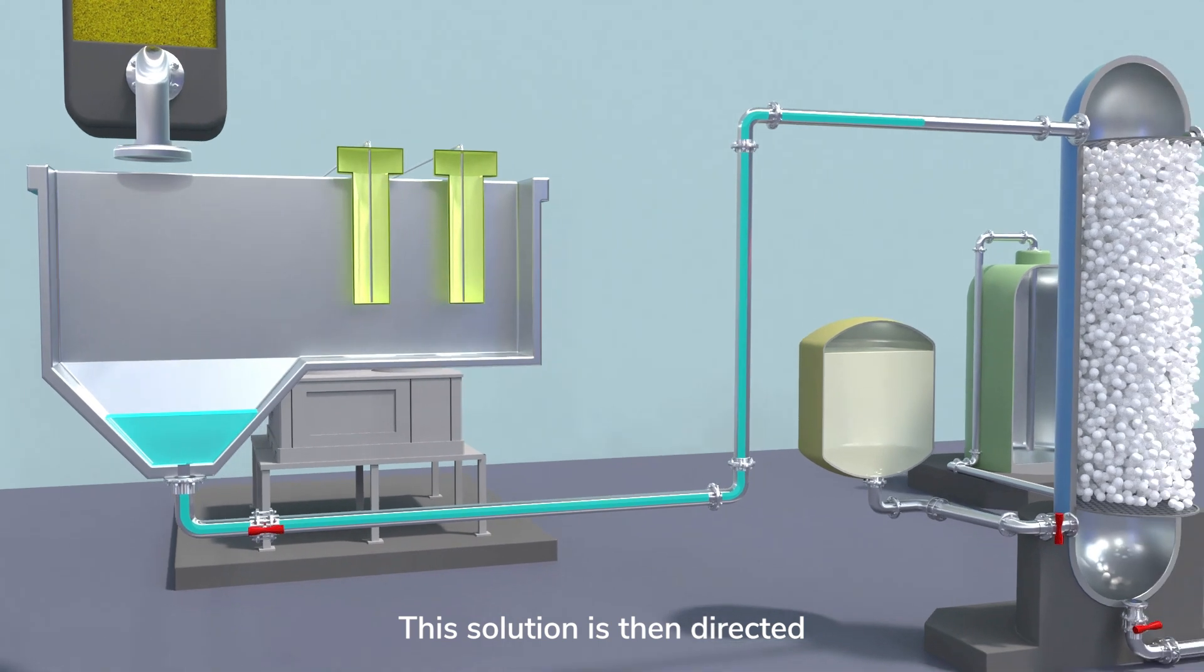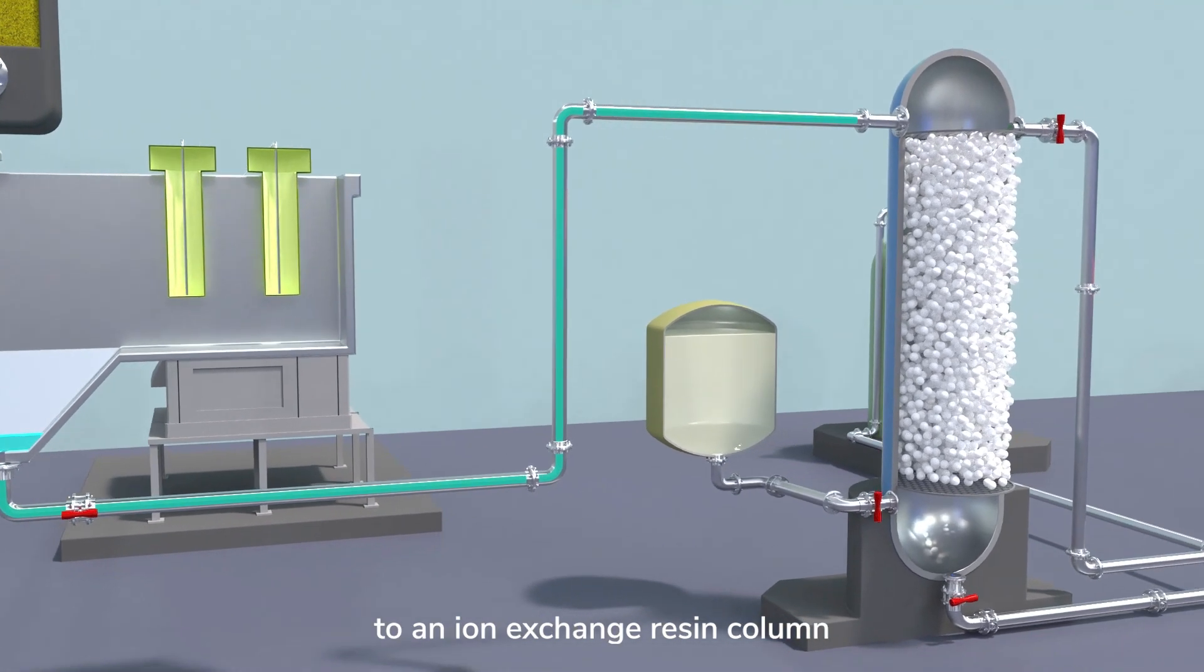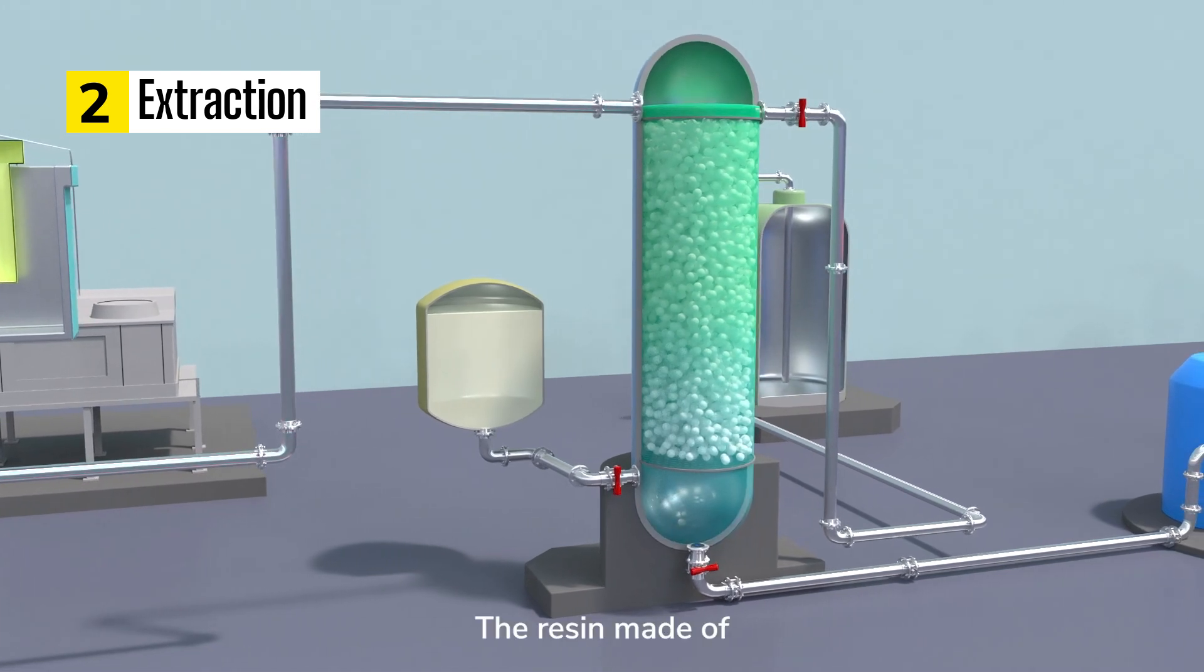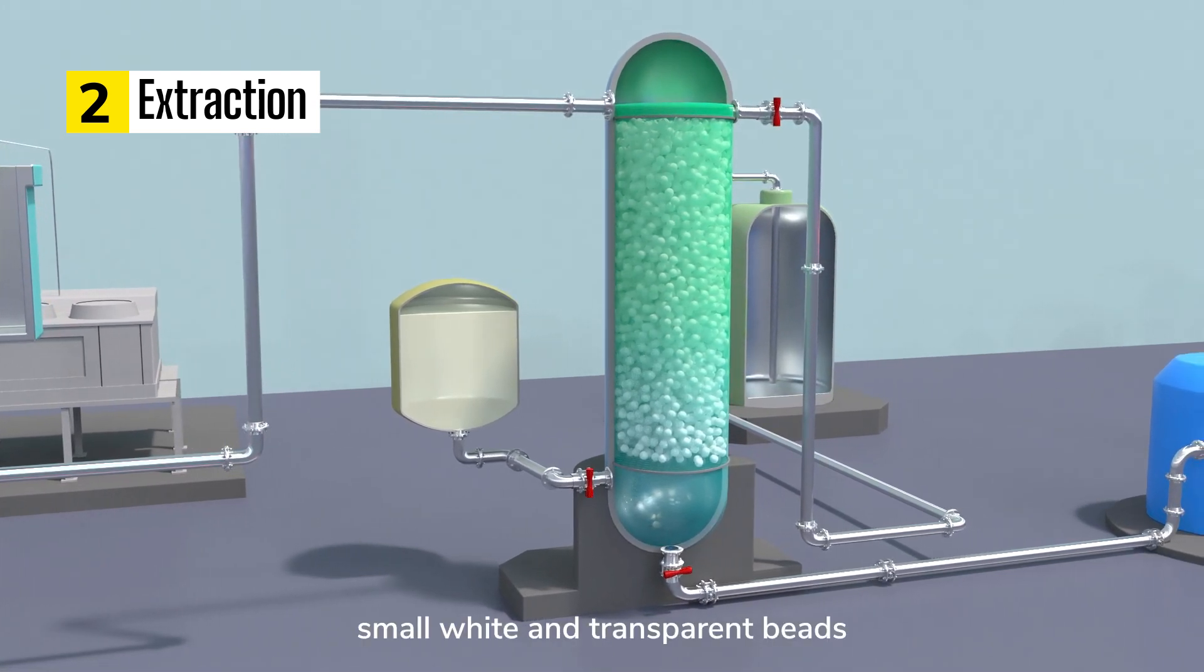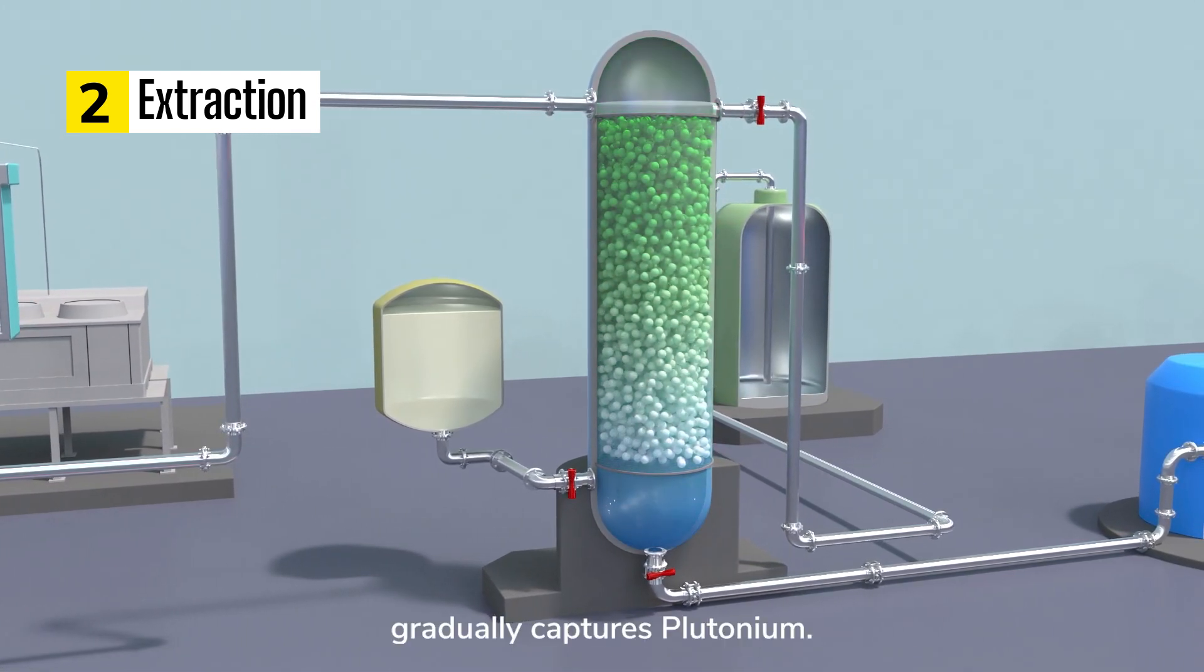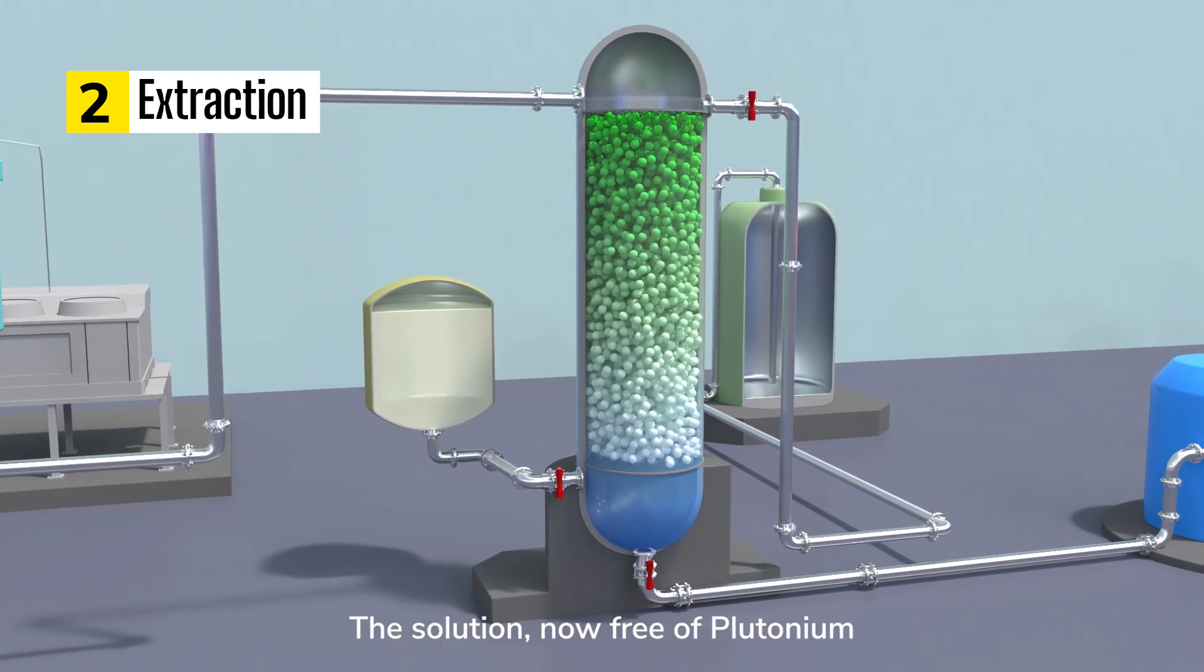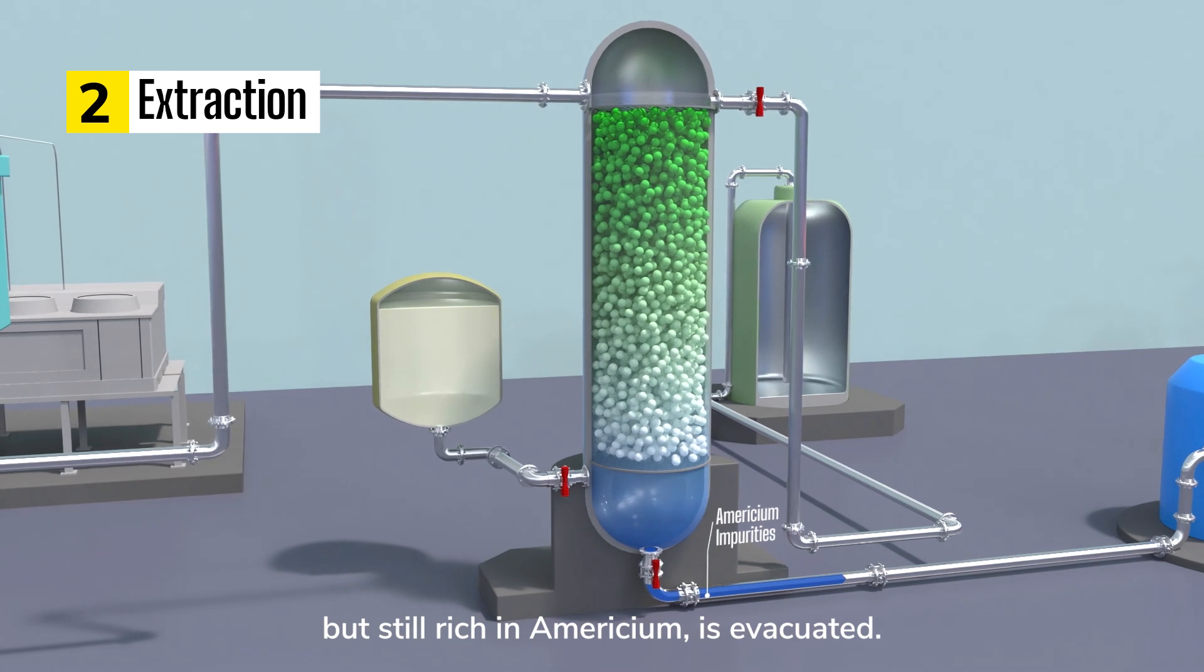This solution is then directed to an ion-exchange resin column to separate the elements. The resin, made of small white and transparent beads, gradually captures plutonium. The solution, now free of plutonium but still rich in Americium, is evacuated.